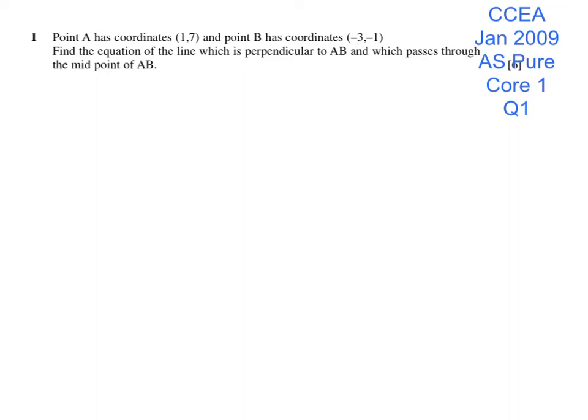January 2009, Core 1, Question 1. To start the question, I'm going to find the gradient AB, and that is always change in Y over change in X.